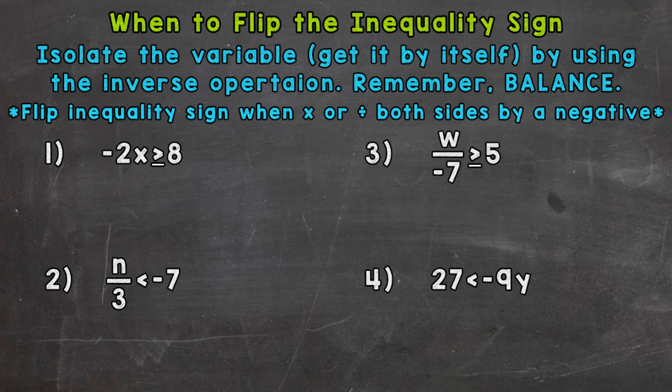When we solve these, we need to isolate the variable, which means get it by itself, by using the inverse or opposite operation. Keep everything balanced — whatever we do to one side, we have to do to the other. We have four examples here: three of them we're going to need to flip the inequality sign, and one we will not.